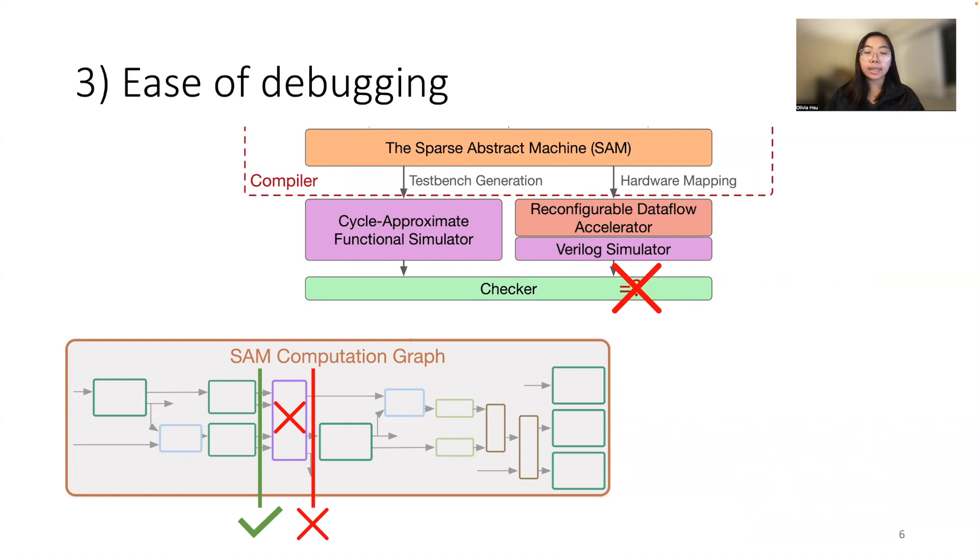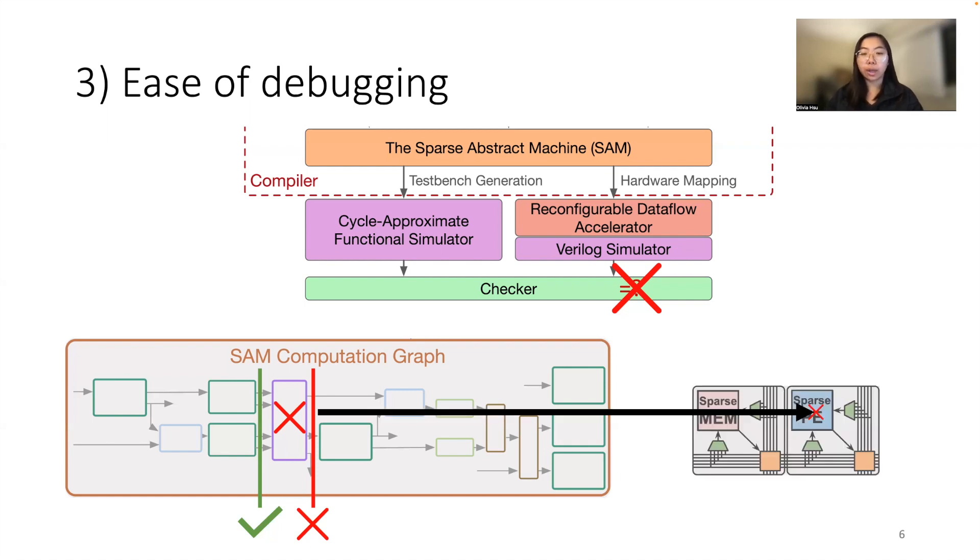Since we can pinpoint where the mismatch occurs at a fine grain level, that translates directly to the hardware. This allows for ease of debugging twofold. One, the pinpointing of the bug easily allows for filtering out the complexity from the hardware side. Two, we're able to debug mainly in software in Python, which means debugging no longer requires specialized hardware knowledge.